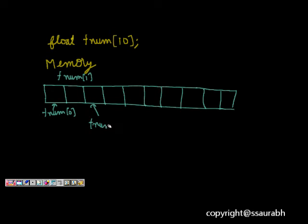and this is f num 2. It starts from 0. And similarly, let's say we want to define a char array. We will write char,